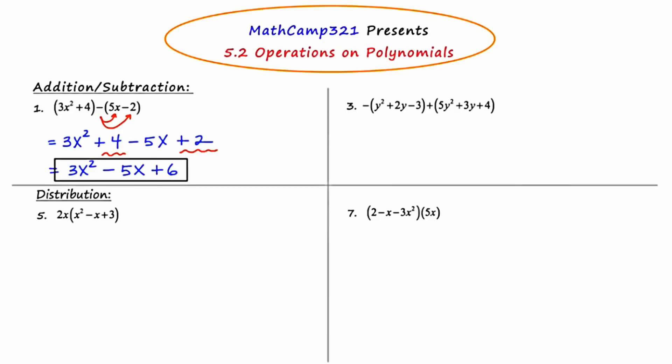In number 3, we have a polynomial that's preceded by a negative. That negative is going to be distributed into each of those three terms of the first polynomial. When I distribute that negative through, I'm going to end up getting negative y squared minus 2y plus 3, then plus 5y squared plus 3y plus 4.